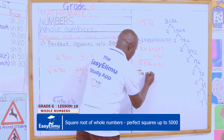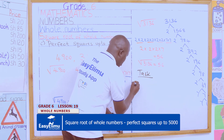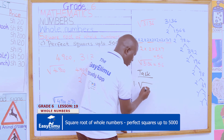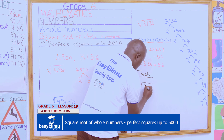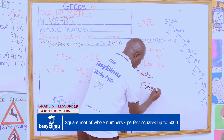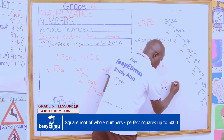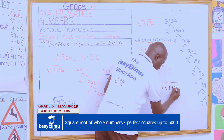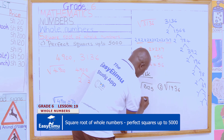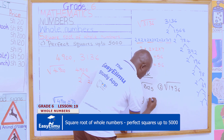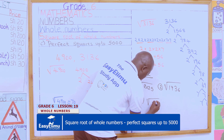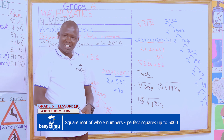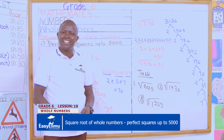For our conclusion task, work out the following: What is the square root of 2,025? Number two, work out the square root of 1,936. And finally, number three is the square root of 1,225. Hope the lesson was enjoyable — let us meet again in the next lesson.